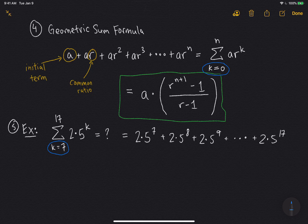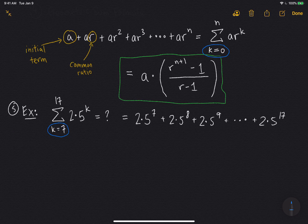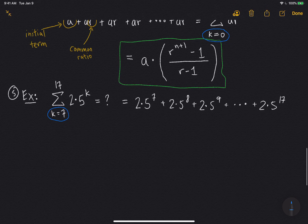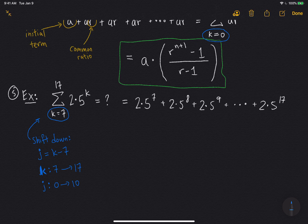So I have a little bit of a problem. I have to shift the index so that, I have to shift the counter down so that I can match the geometric sum formula. So this is a little trick that you have to get used to. So shift down. So what I do is I sub in a new variable, let's say j, as k minus 7. So I just take k and I shift it down by 7 units. That means that since k ranges from 7 to 17, then j would range from 0 to 10, right?